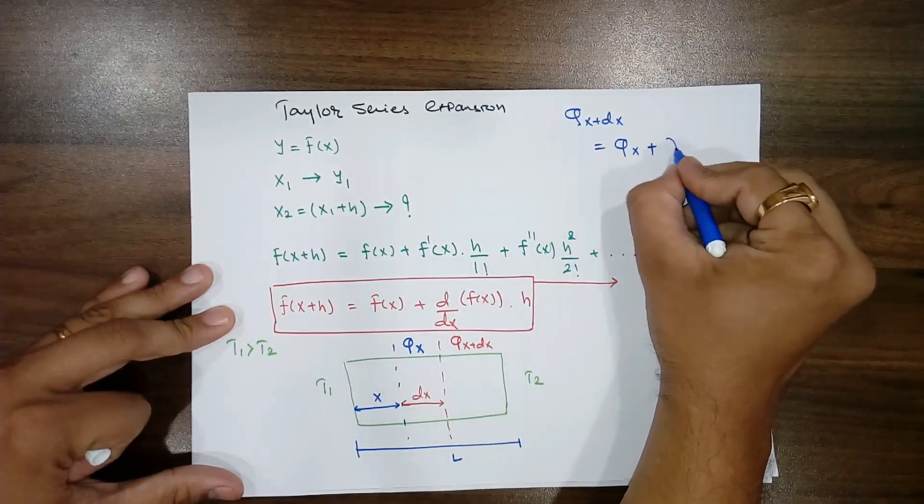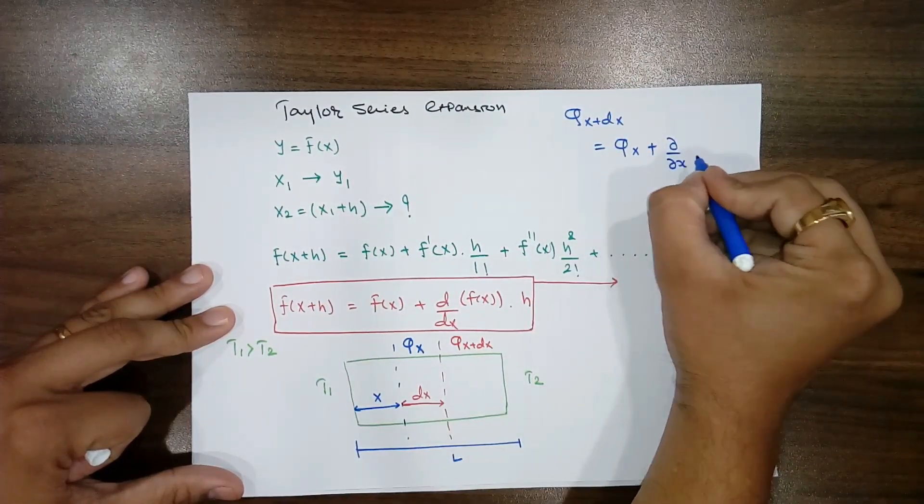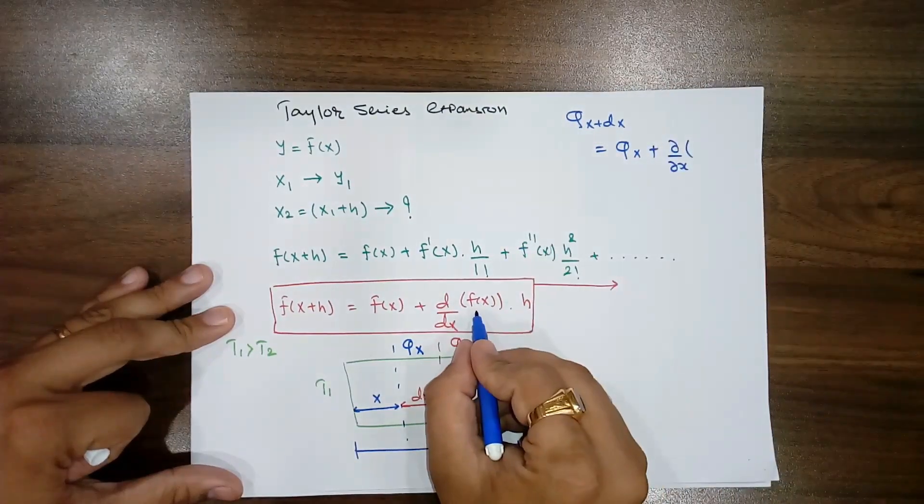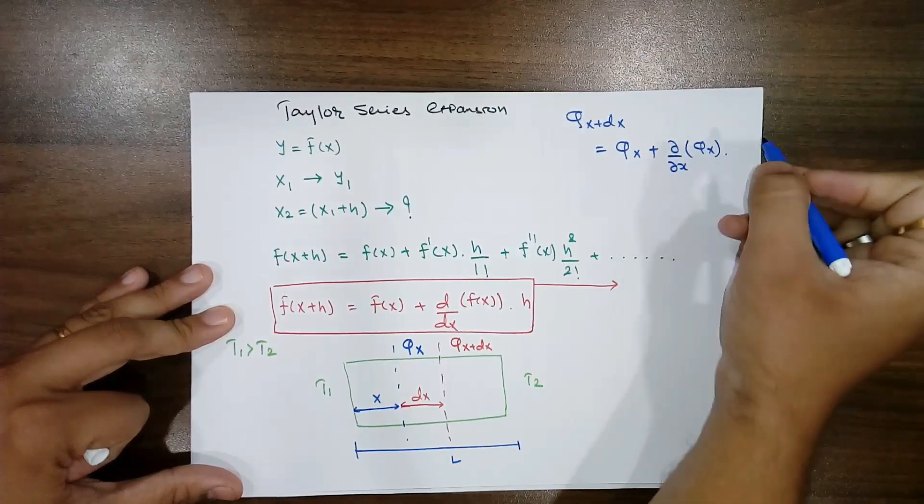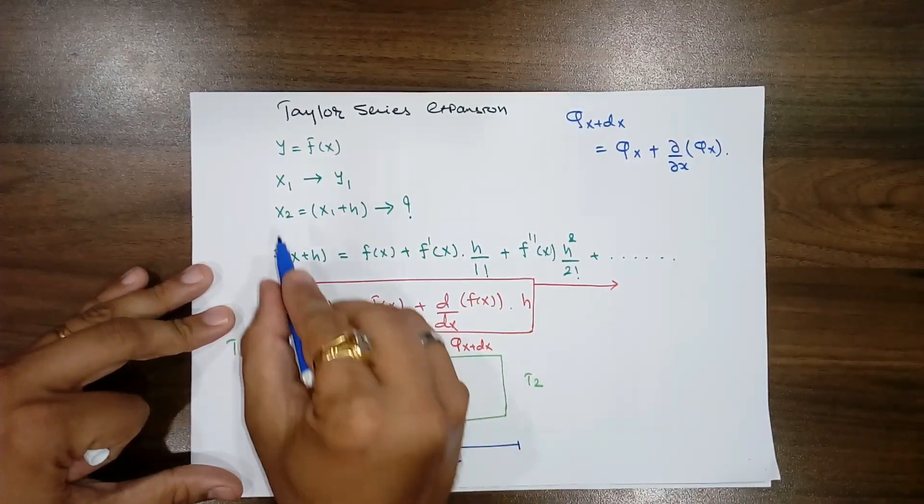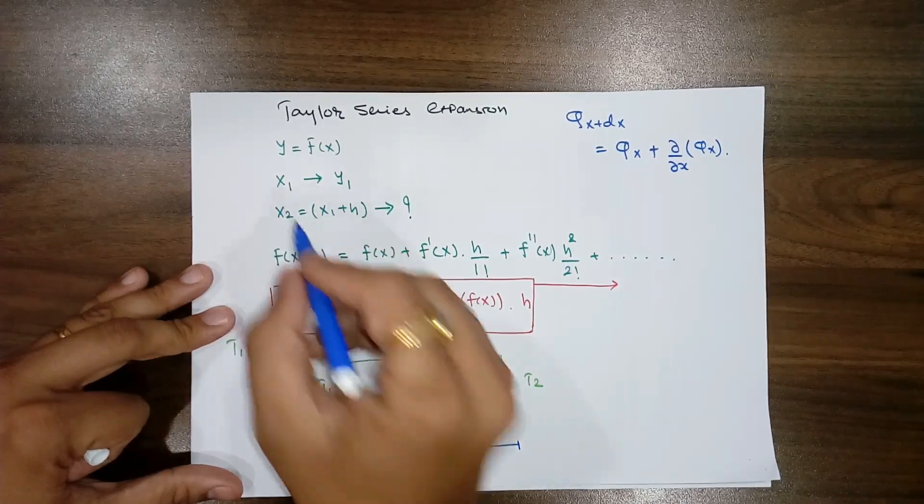It means according to here it is fx, plus del by del x, or you can write d by dx of the particular functions, and that particular function is Qx in this case, so Qx into h.